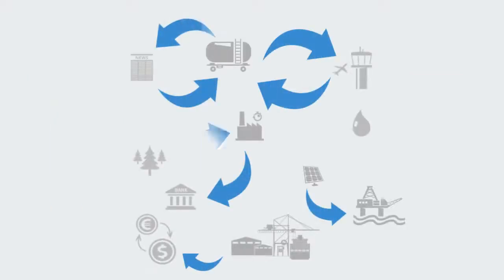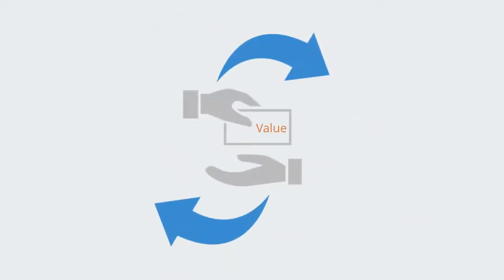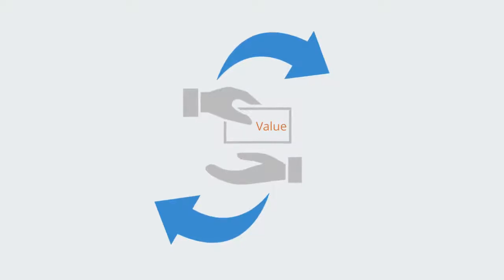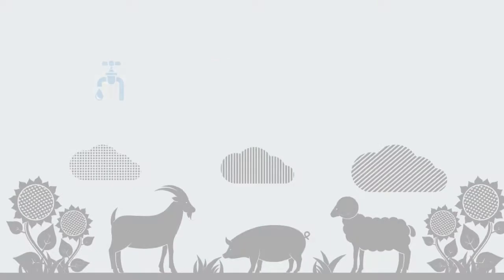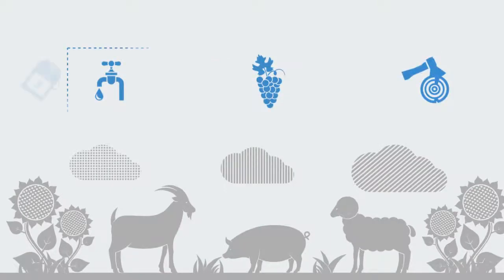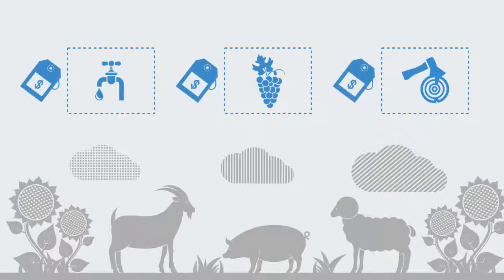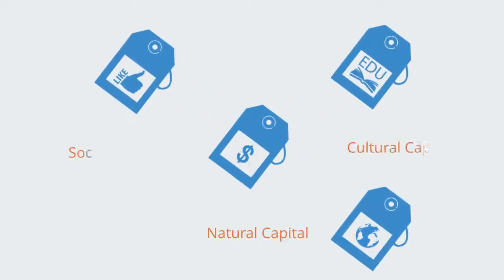Economies function as distributed management systems. Through the negative feedback loops of the market, they manage whatever it is that people value, can quantify, and exchange. Until very recently, we have only really valued the derivatives of ecosystems — the water, food, minerals, etc. — in terms of their utility, to which we could ascribe a financial value. But this is changing as we build a new kind of post-industrial economy with a more complex, multi-dimensional conception of value.